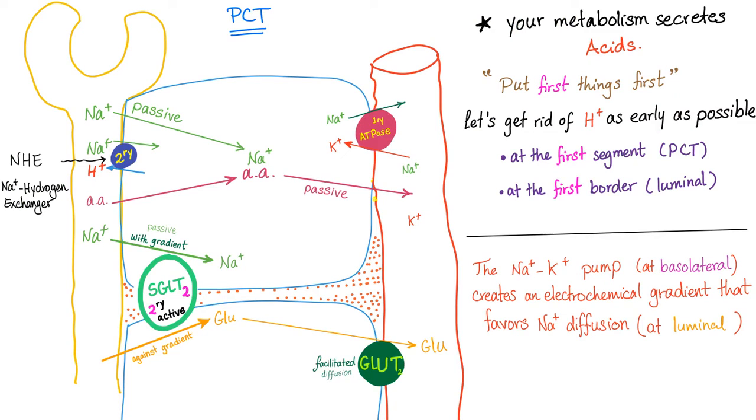How does the proximal tubule handle acid? As you know, your metabolism secretes acids, acids, acids. So, the kidney puts first things first. Let's get rid of this acid as early as possible. What do you mean by early? At the first segment, which is the proximal convoluted tubule, and at the first border, which is the luminal border. Do you think we're gonna wait until the distal convoluted tubule to secrete hydrogen? No. Do you think we're gonna wait until this basolateral border? No. Get rid of acid as early as possible, because your metabolism is secreting acid like crazy, and it's gonna cause acidosis until you die. So, let's get rid of acid early. We get rid of acid thanks to sodium, and this is a secondary active transport. We consumed energy only once, so this is primary active, but this is secondary active. We call this sodium hydrogen exchanger. So, this is the story of acid in brief.